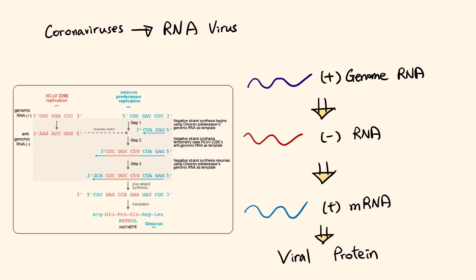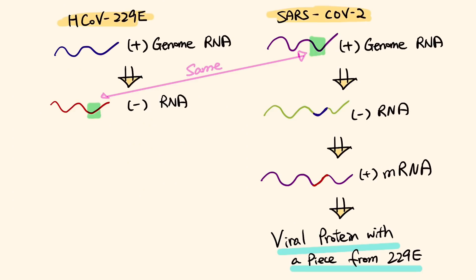To explain this in layman's terms: the coronavirus, being a type of RNA virus, needs to go through several steps of RNA synthesis — from positive genomic RNA to negative RNA, and then back to positive messenger RNA — leading to the translation of the viral protein. Part of the 229E negative RNA actually looks exactly like part of the positive genomic RNA of the SARS-CoV-2 coronavirus, which may be why CoV-2 accidentally picked it up and later turned it into part of its spike protein.